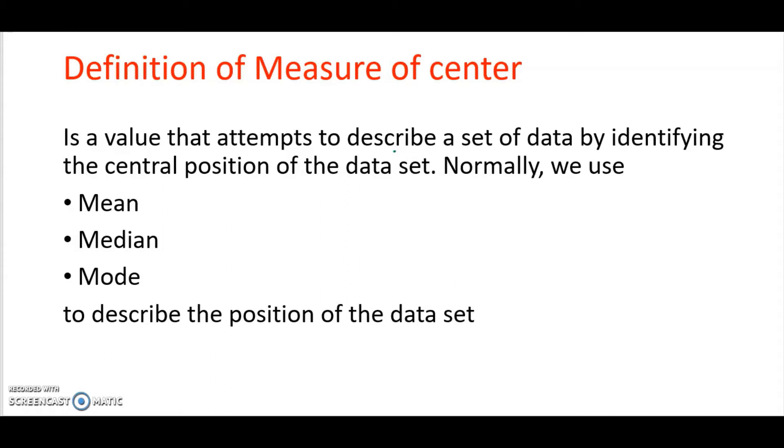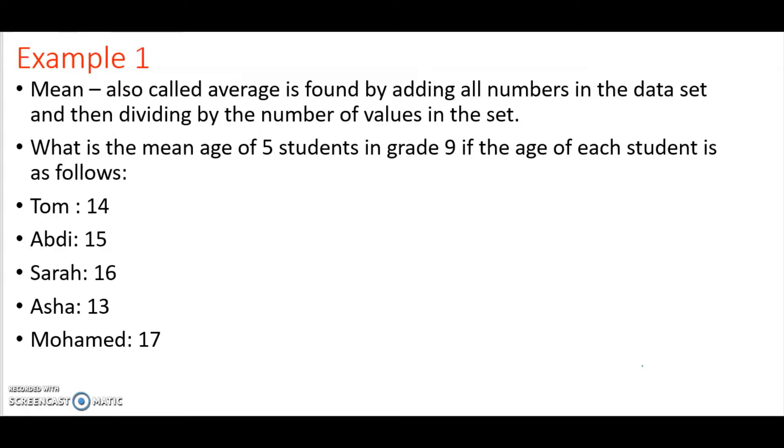Let's start with an example of finding the mean of any given data set. Mean, also called average, is found by adding all the numbers in the data set and then dividing by the total number of values in the data set.